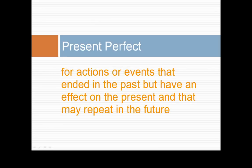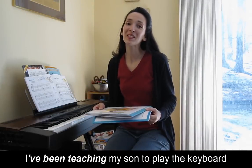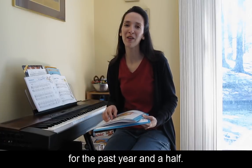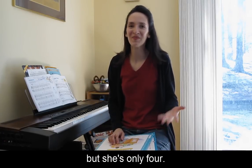The present perfect is used for actions or events that ended in the past but have an effect on the present and that may repeat in the future. The present perfect progressive is used for actions that began in the past and continue up to now. My daughter hasn't shown much interest yet, but she's only four.